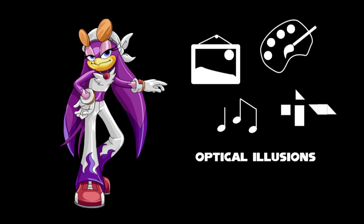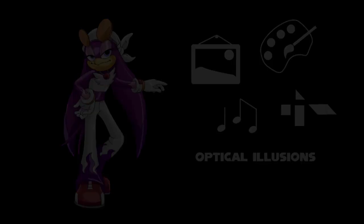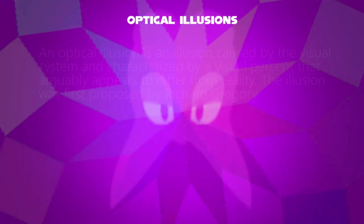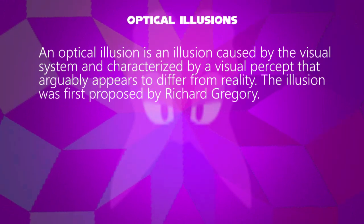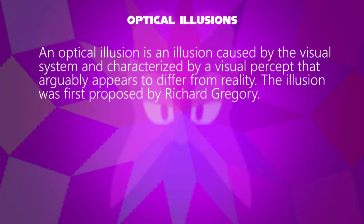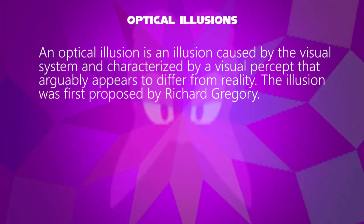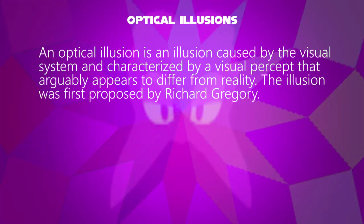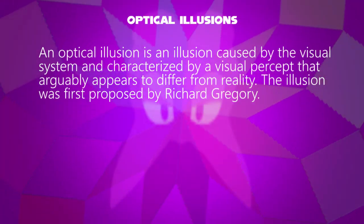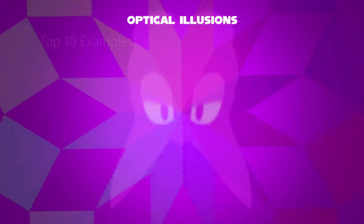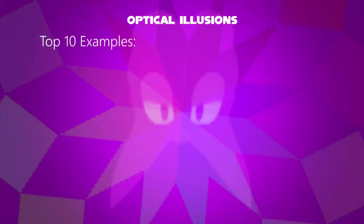Hello, I'm Wave. We will learn about optical illusions. An optical illusion is an illusion caused by the visual system, characterized by a visual percept that arguably appears to differ from reality. The illusion was first proposed by Richard Gregory. For example, here are the top 10.